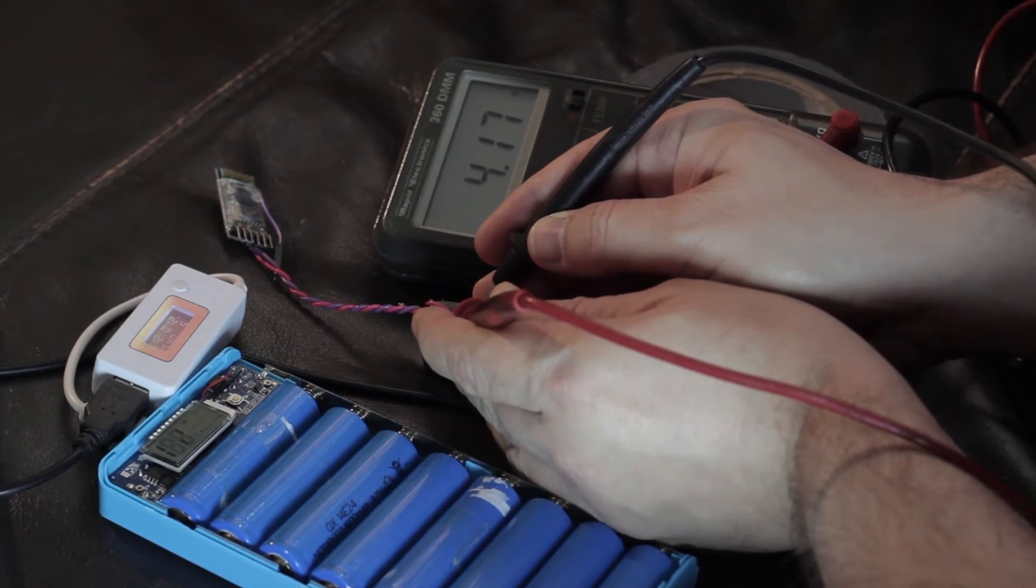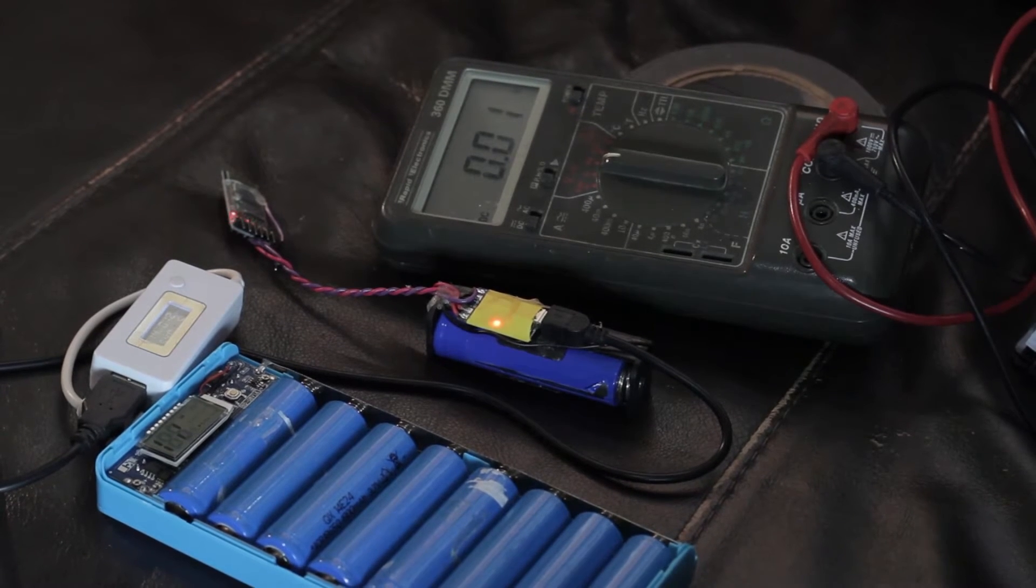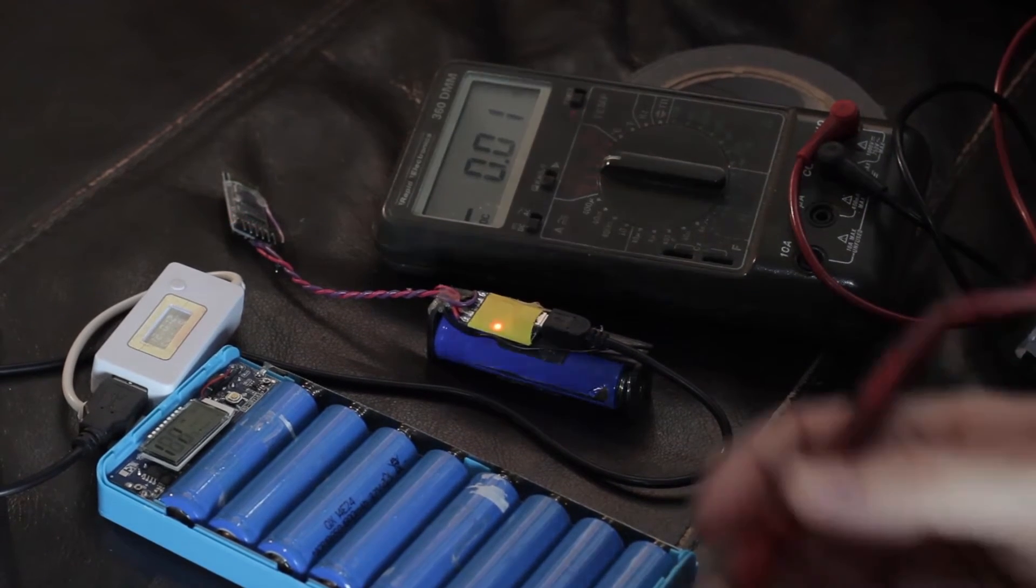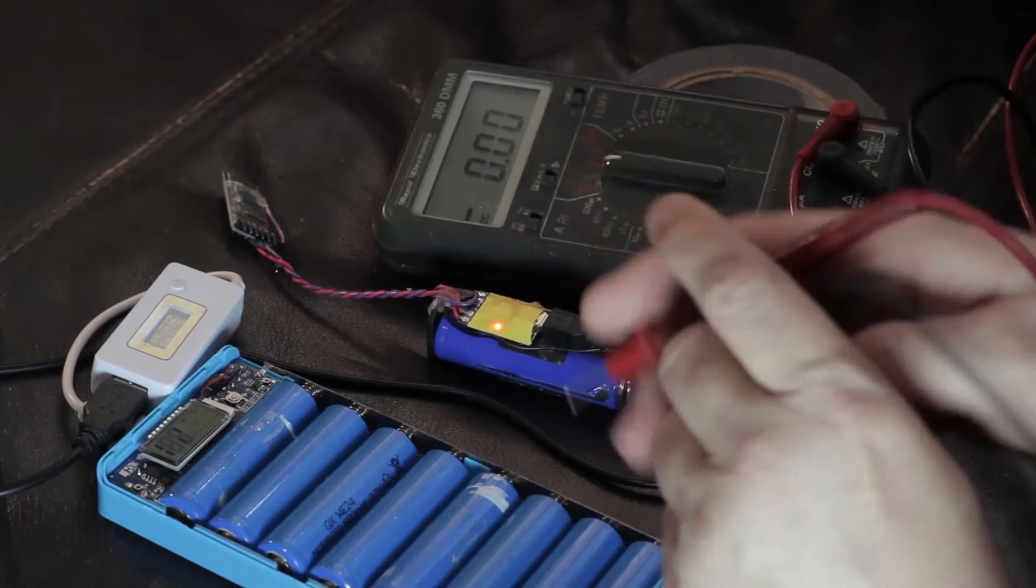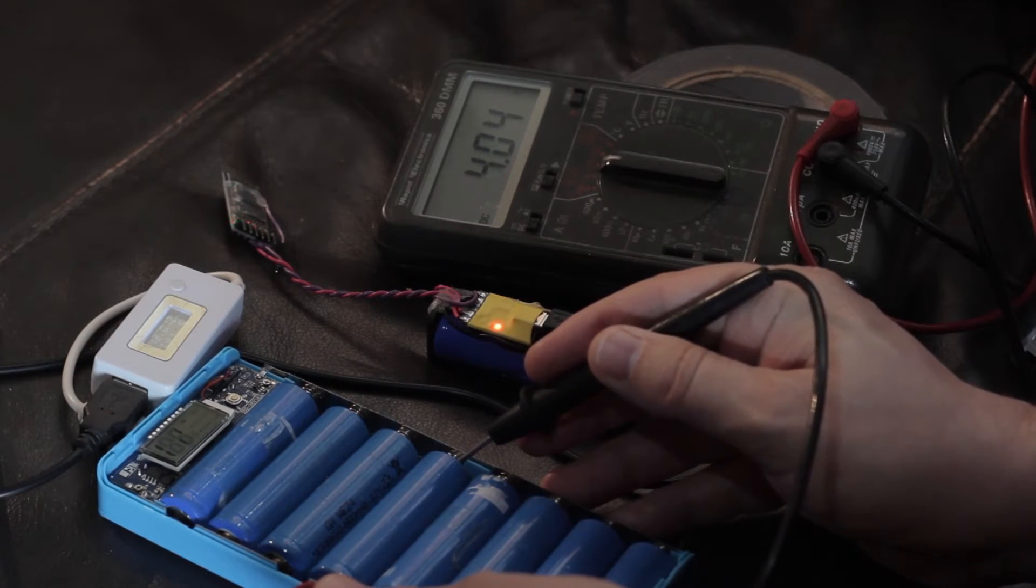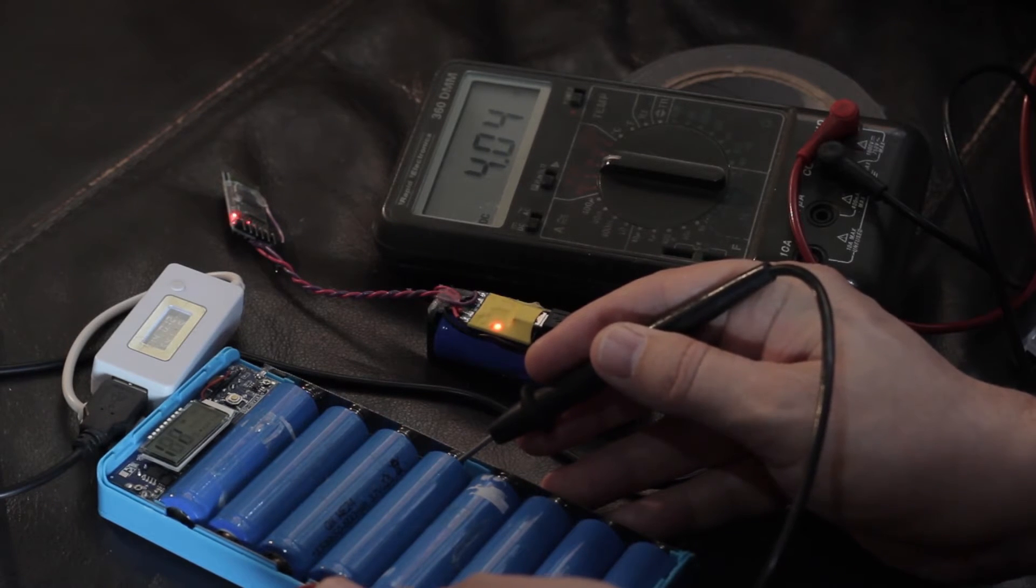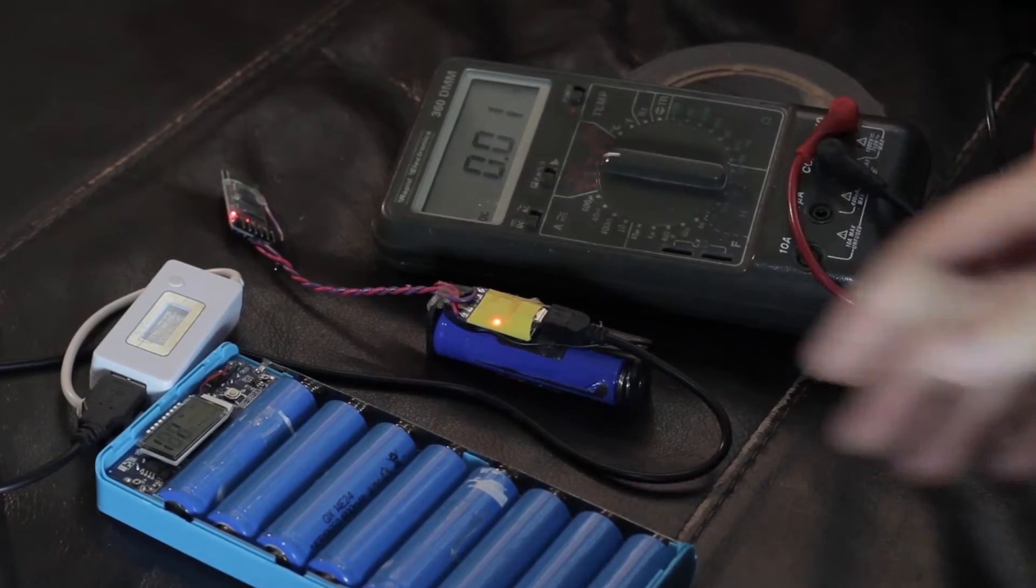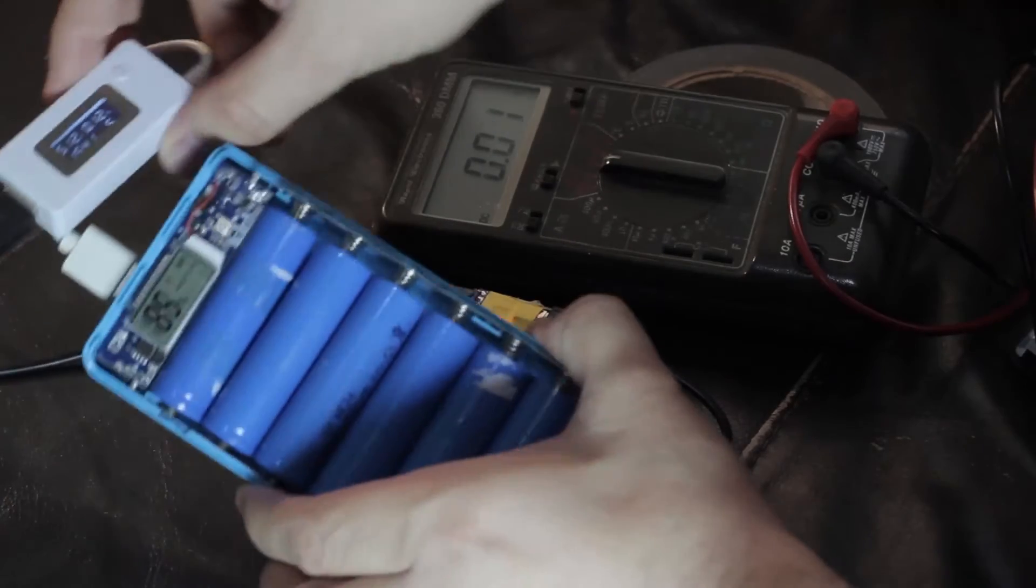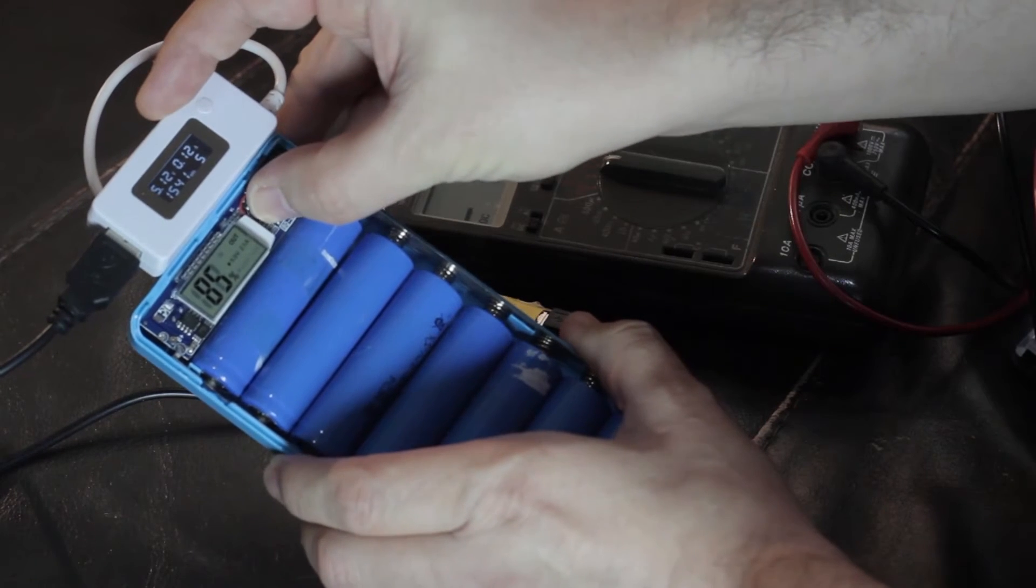Now the cell is currently at 4.17 volts, so it's closing in rapidly on the charge termination point. The voltage across the battery pack is currently measured at 4.04, so it's still in excess of the 4 volts. And you'll see the power bank itself is stating 85% available.